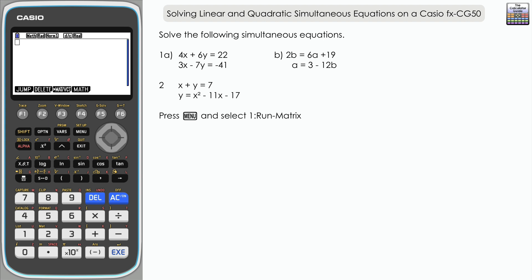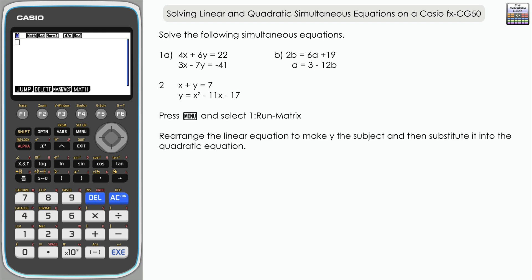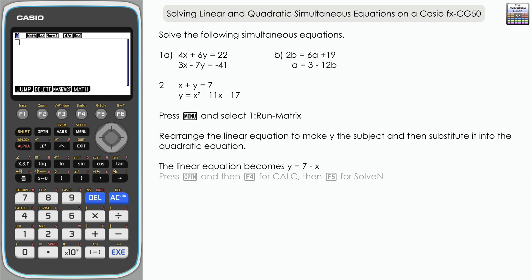What we need to do before inputting into the calculator is make a substitution for y. From the first equation we can rearrange to get y equals 7 minus x — just subtract x from both sides. Since y equals 7 minus x, we substitute that into the quadratic equation. The function we're going to use to help us is SolveN — go to Option, then F4 for Calc.